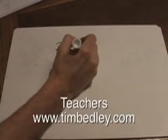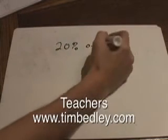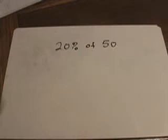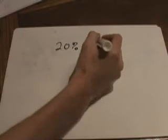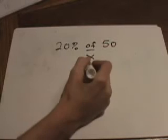Say 20 percent of 50. How would you find 20 percent of 50? Well, the first thing you need to know is that the word 'of' means multiply in math. So we'll put an x there, meaning multiply. Some of you might be using the dot to mean multiply.